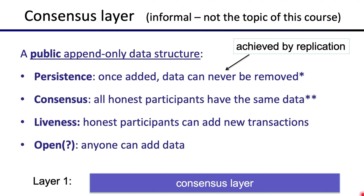The second property is actually called consensus, which says that all the honest participants in the network agree on the same data — they all agree on what's on the chain. It's not the case that one party thinks one thing is on the chain and another thinks something else. This may not quite hold for the most recently added blocks, which are still stabilizing, but for all earlier blocks there should be full consensus among honest participants.